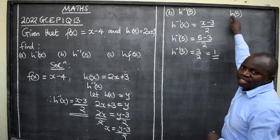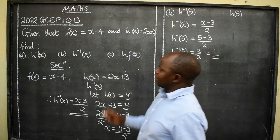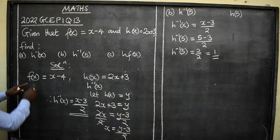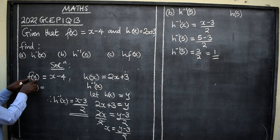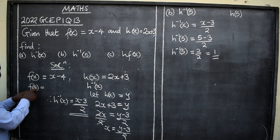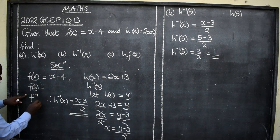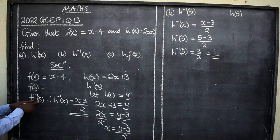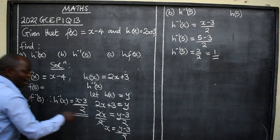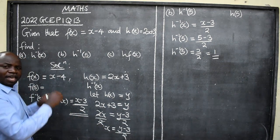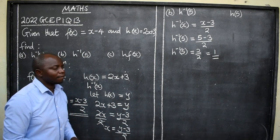If you are given it in a direct form like find f(5), it means you substitute 5 directly into the function. For example, f(5) = 5 − 4 = 1. But if they write h⁻¹(5), it does not mean substitute 5 directly into h(x). It means first find the inverse, and then substitute 5 into the inverse. That technique should be clear.